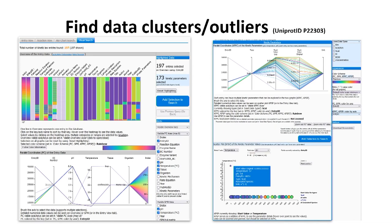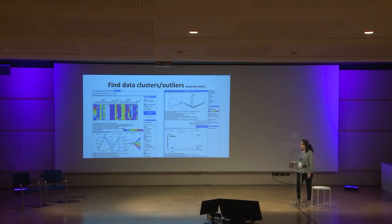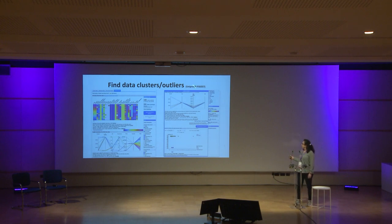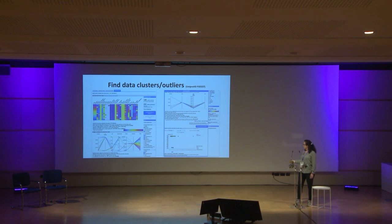With this kind of visualization you are much faster at finding outliers or clusters in your data, and if you click on a point you can also see its value. You can select parts of these graphs — they are all connected with each other — to define your query. Another example of an outlier: looking at a UniProt ID where you have a distribution of values, you can see that some data cluster together while one value is clearly outside the others.